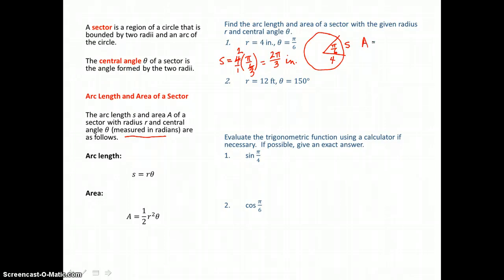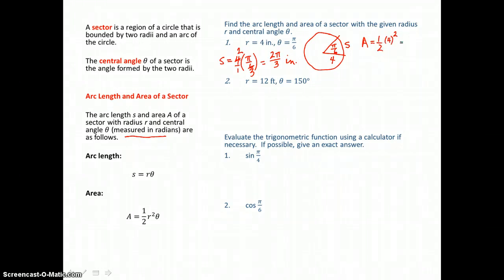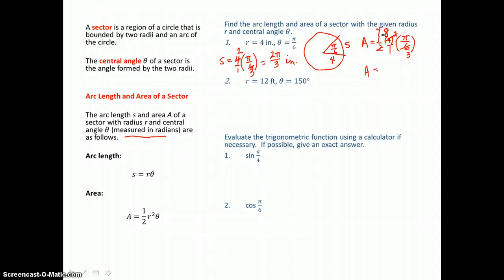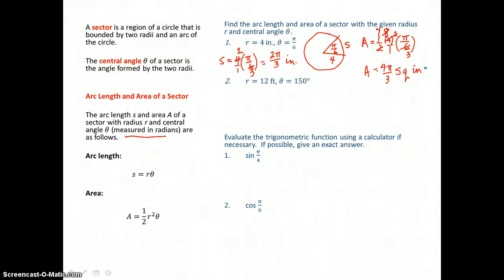Now we want the area of the sector — the measure of the inside of this pie-shaped piece. Area is one-half times radius squared times theta: one-half times 4 squared times π/6. Four squared is 16, and 2 goes into 16 eight times. We still have a factor of 2 top and bottom: 2 goes into 8 four times and into 6 three times. Multiplying across, we get 4π/3 square inches for the area of that sector.